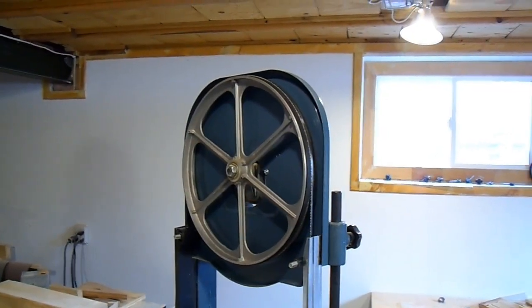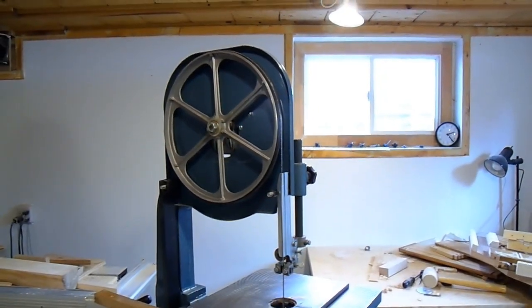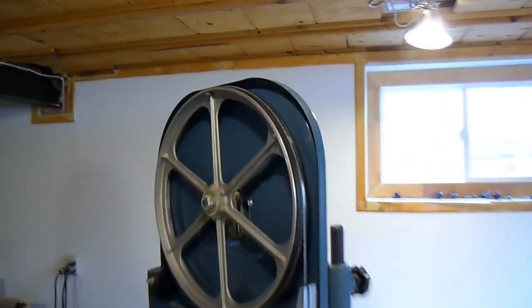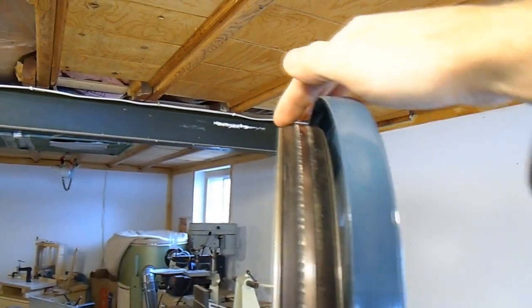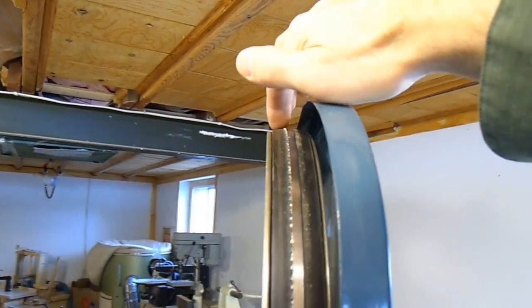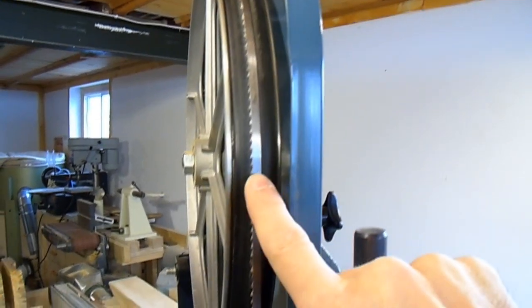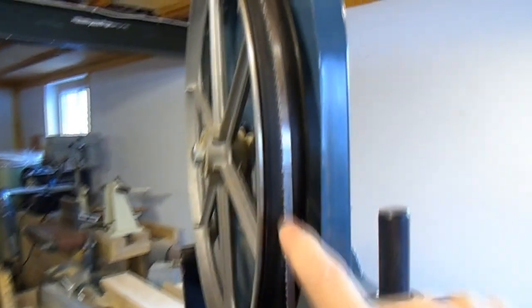The principle that keeps a flat belt tracking on a crown pulley is also exploited by a bandsaw. The bandsaw wheels also have a slight crown on them, although it's kind of hard to see under the blade right now. And that's what keeps the blade, which acts as a belt, centered on the two wheels.